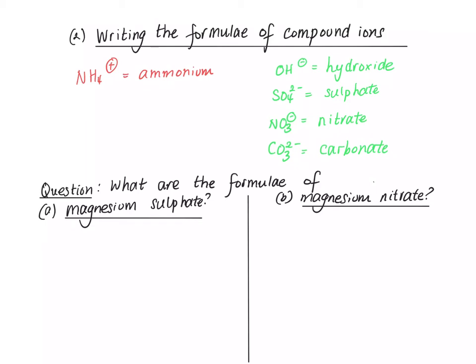These are the compound ions, ions which contain more than one element that you need to learn. So ammonium is NH4+, hydroxide is OH-, sulfate is SO4 2-, nitrate is NO3-, and carbonate is CO3 2-.